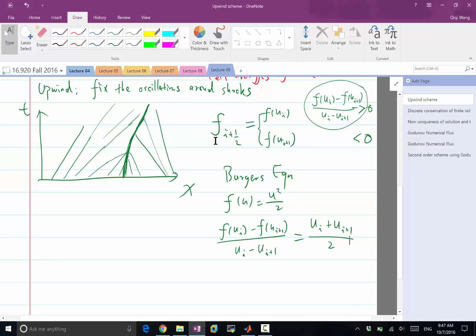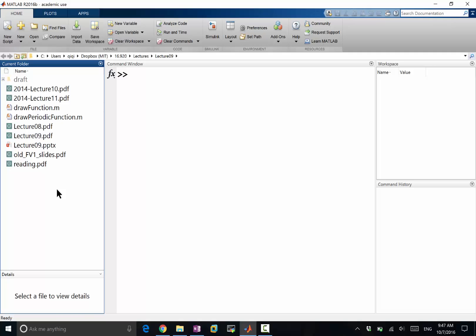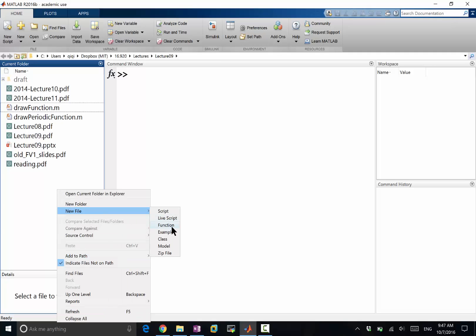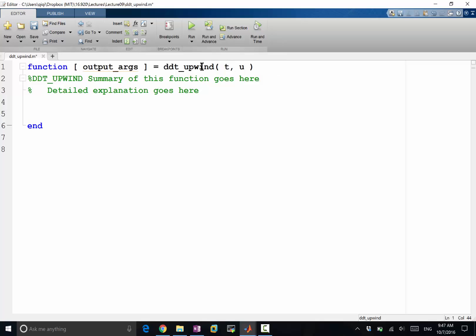The upwind scheme in finite volume is looking at the average value of the solution on both sides of the interface and choosing the side to bias according to the average solution in Burger's equation. Let's go to MATLAB and write a new function called ddt_upwind with t, u, and ddt. Still the first thing to compute is the f bar. The cell averaged flux is equal to u square divided by 2. That's still the same.